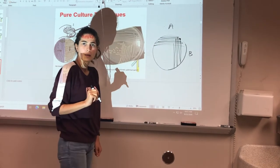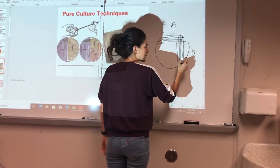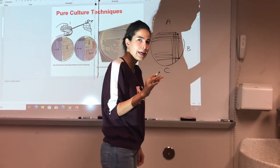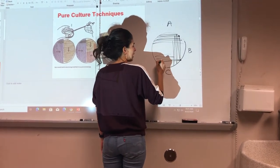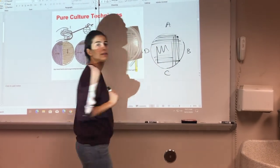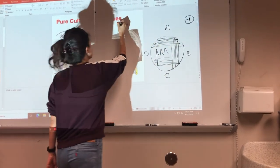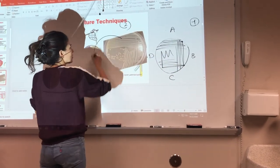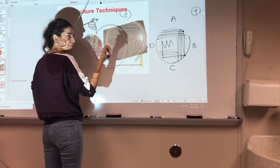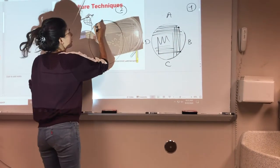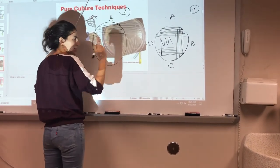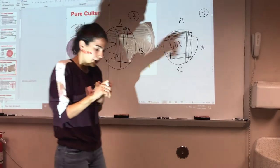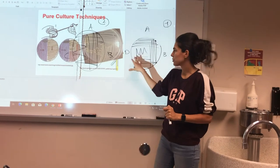We call this section B. Again, sterilize your loop, grab some inoculum from B, and go to C. Same thing — sterilize your loop again, grab some inoculum from C, and streak. This is section D. That is one technique. The other technique is the same but with only A, B, and C. Sterilize your loop, grab the bacteria, go to A, sterilize your loop, go to B, sterilize your loop.